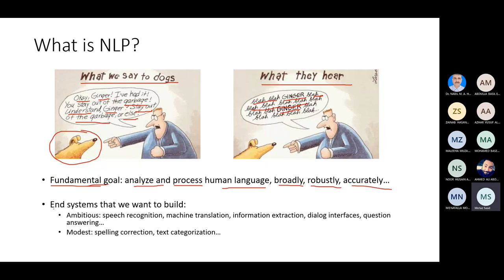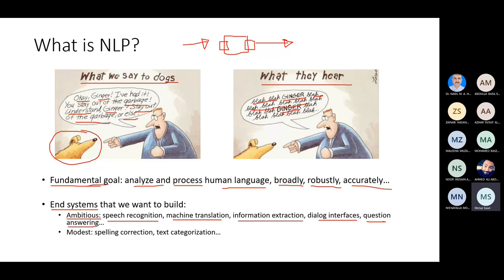We want to build end-to-end systems — systems that receive an input and produce an output. Our ambitions include building speech recognition systems, machine translation, information extraction, dialogue inference, and question answering, and more. Some of these are really challenging problems that are hard to solve; some are solved, some are still open.